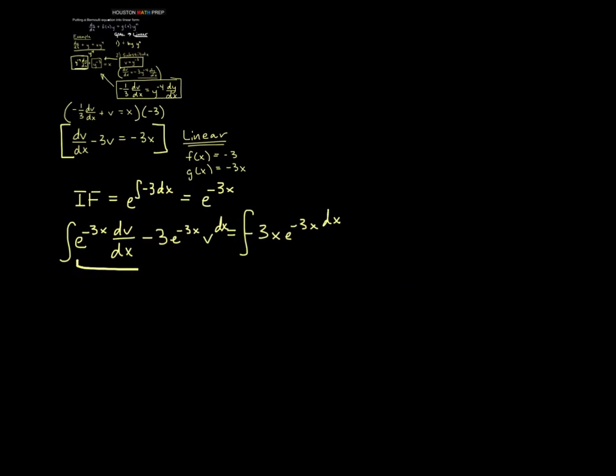So we go ahead and integrate. Remember, this side over here is always going to be a product rule for the integrating factor times our variable v there. Equals, and now to integrate this side, we would need to do it by parts. Maybe I'll go ahead and look at doing the tabular method here. So we'll go ahead and say, we'll choose u to be negative 3x, and we'll choose our dv to be e to the minus 3x dx.